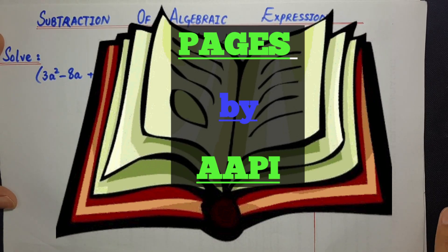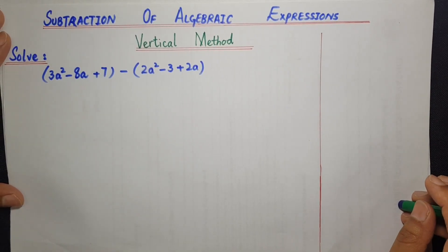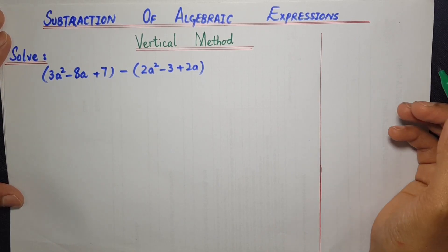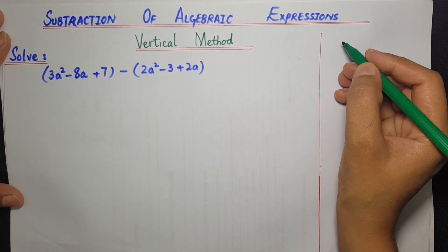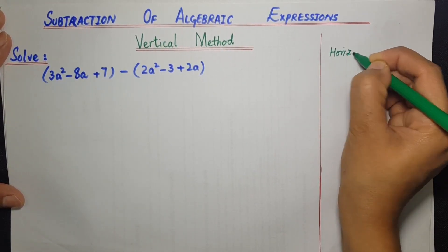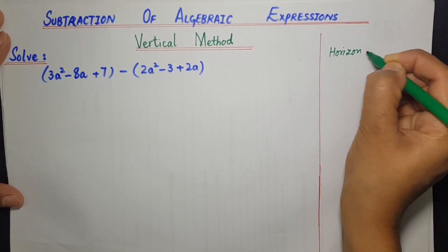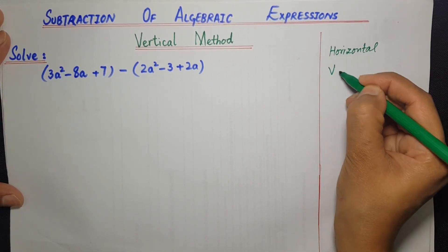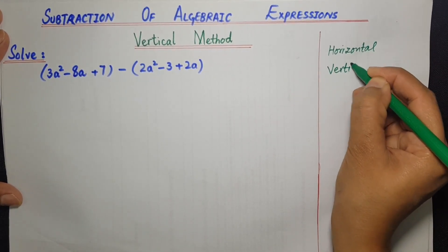Bismillahirrahmanirrahim, Assalamualaikum. Addition of algebraic expressions hum seekh chuke hain, aur aaj se subtraction of algebraic expression seekhenge. Same like addition, there are also two methods of subtracting two algebraic expressions: the horizontal method or row method, and the vertical method or column method.